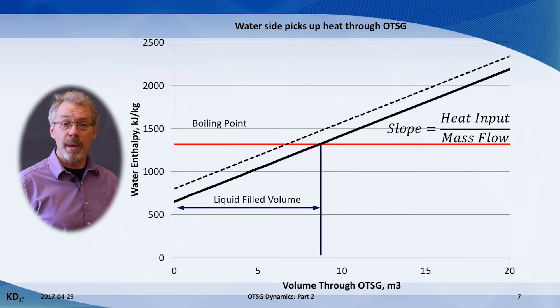Another operating change is to have an increase in the boiler feed water temperature. In this case, the water enters at a higher enthalpy, so for the same firing rate, the steam exits at a higher enthalpy and quality. This also results in a decreased water volume in the OTSG.